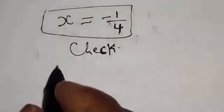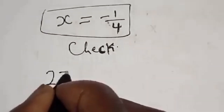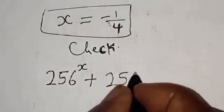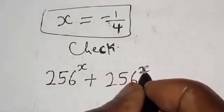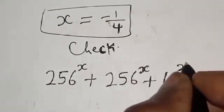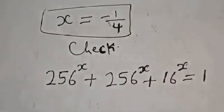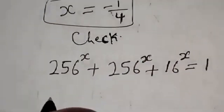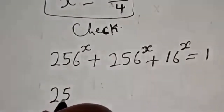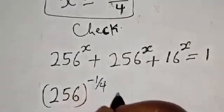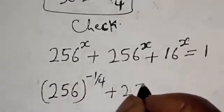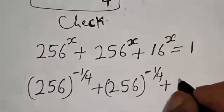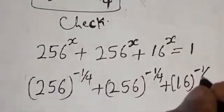Let's check to confirm our answer. We substitute s equals minus 1 over 4 into the given equation: 256 raised to power minus 1 over 4 plus 256 raised to power minus 1 over 4 plus 16 raised to power minus 1 over 4, which should equal 1.